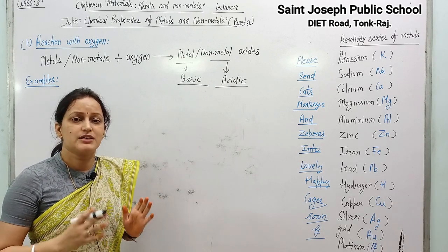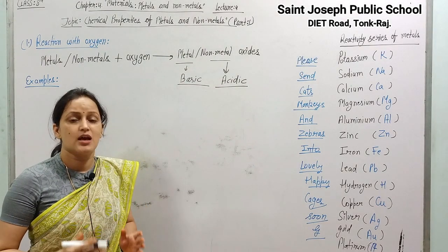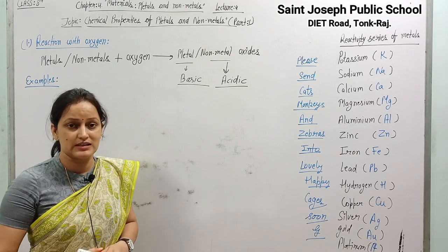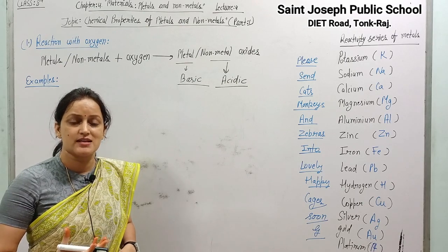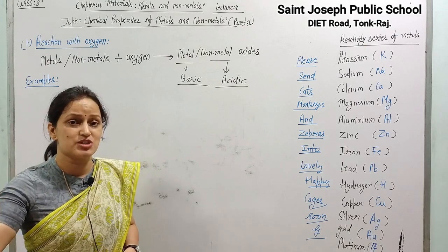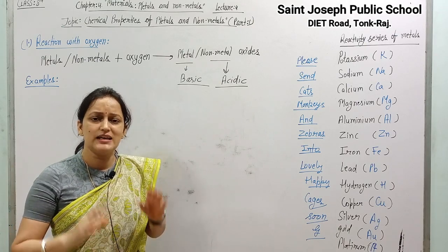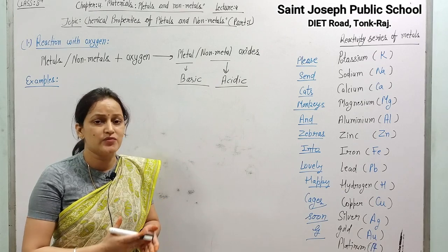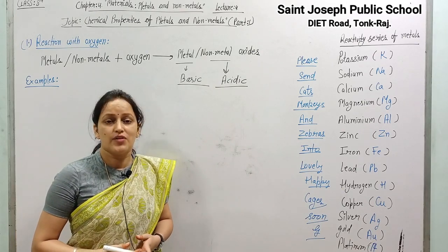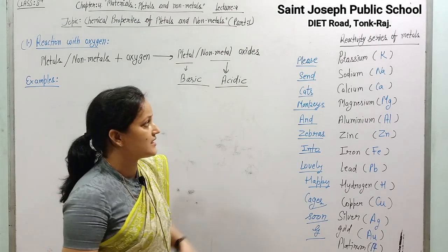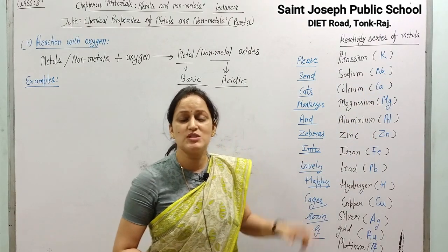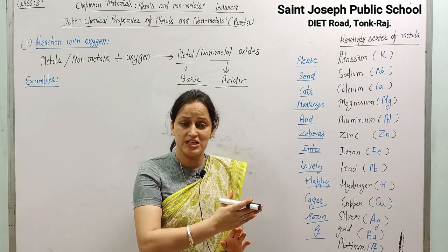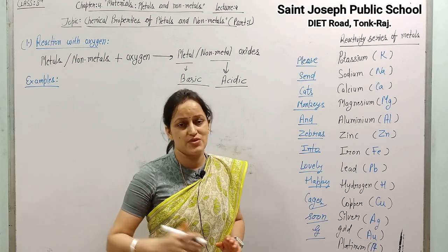Not all metals react with oxygen gas with the same intensity — different metals vary in their properties. Some metals are very reactive with oxygen gas whereas certain metals are not that reactive. To find out which metals are more reactive and which are less, we have a series named the reactivity series of metals, which tells us which metals are most reactive, which are moderate, and which are the least reactive.